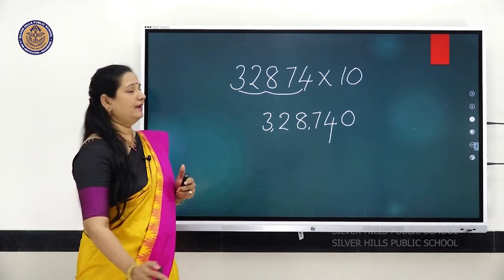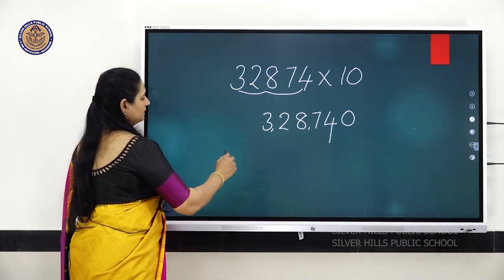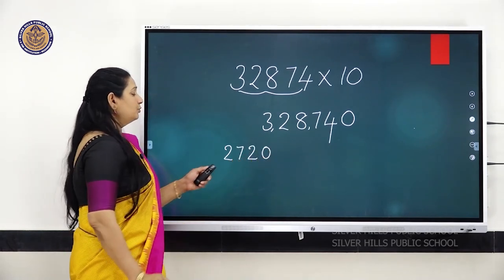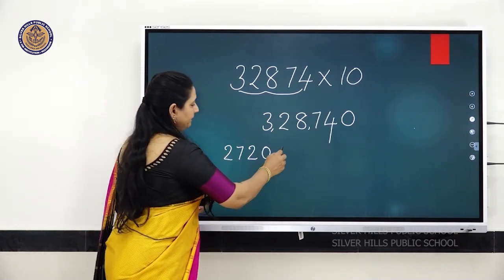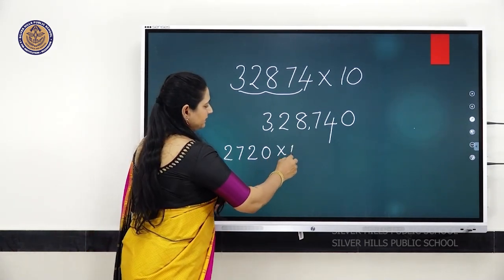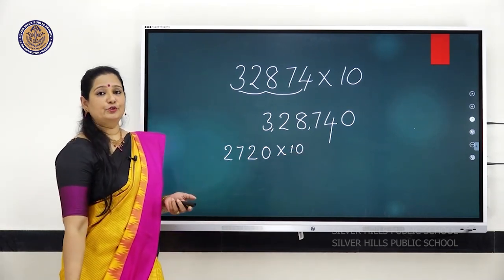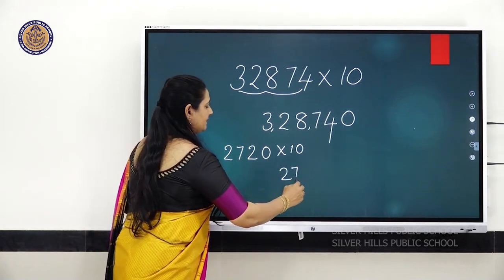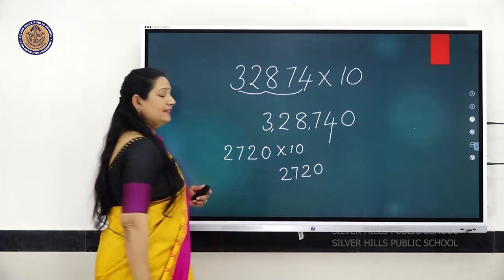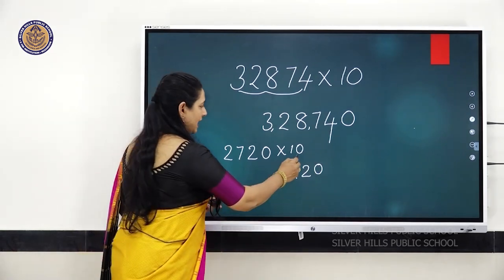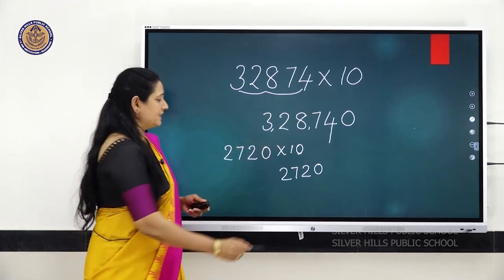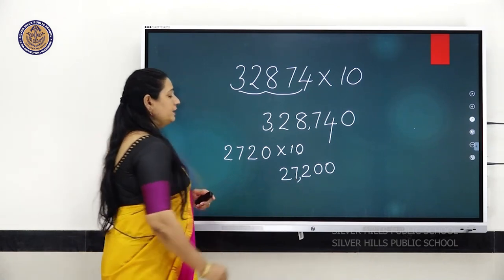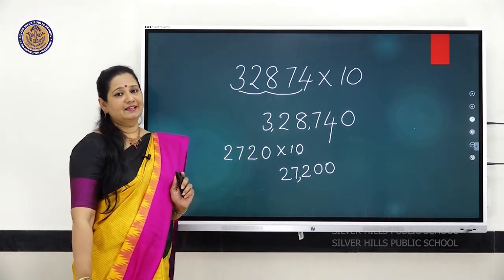Let us do one more example. 2,720 multiplied by 10. How to do this? First, write the number 2,720. Then, you have to add one extra zero because in 10 you have one zero. So the number becomes 27,200.